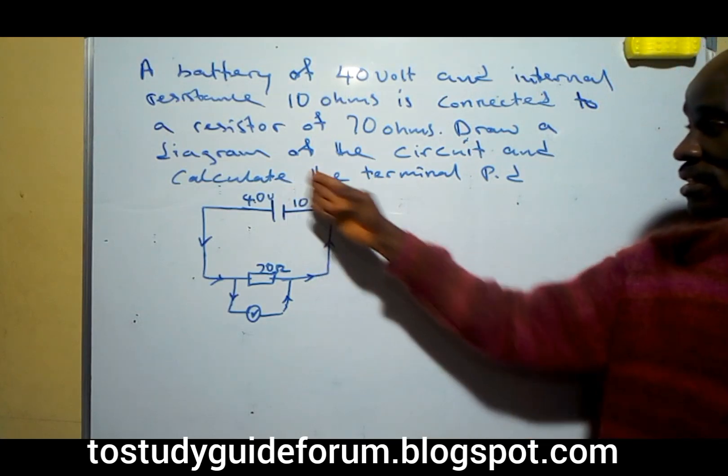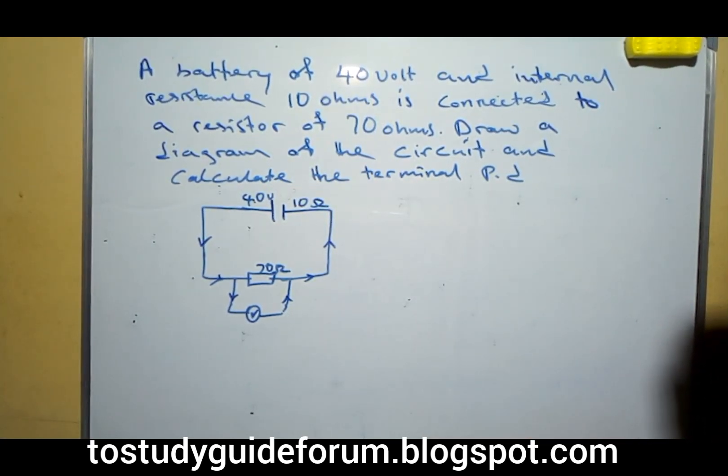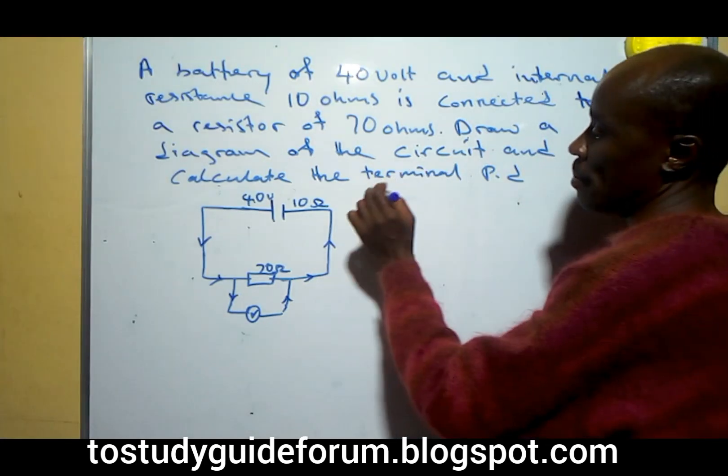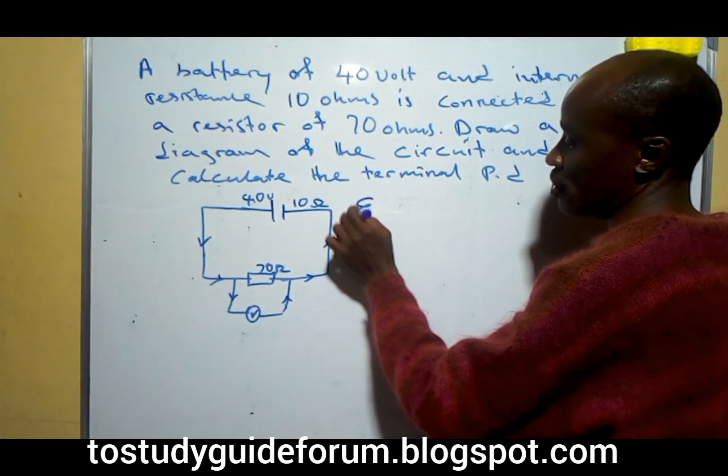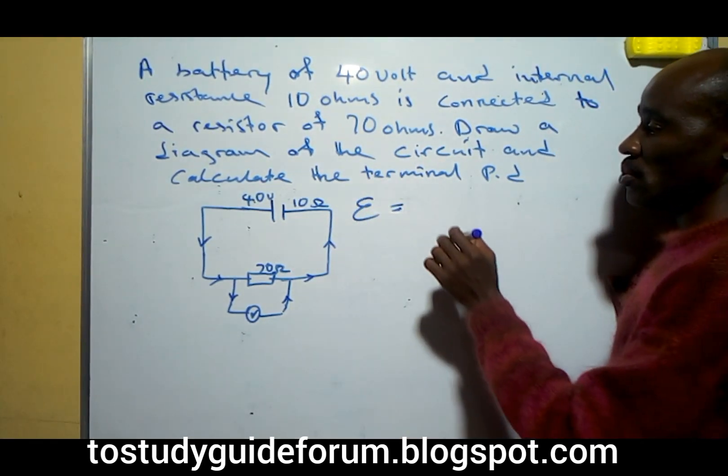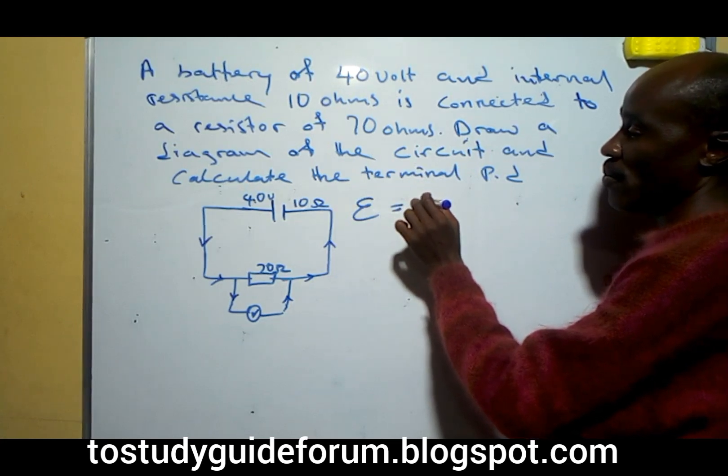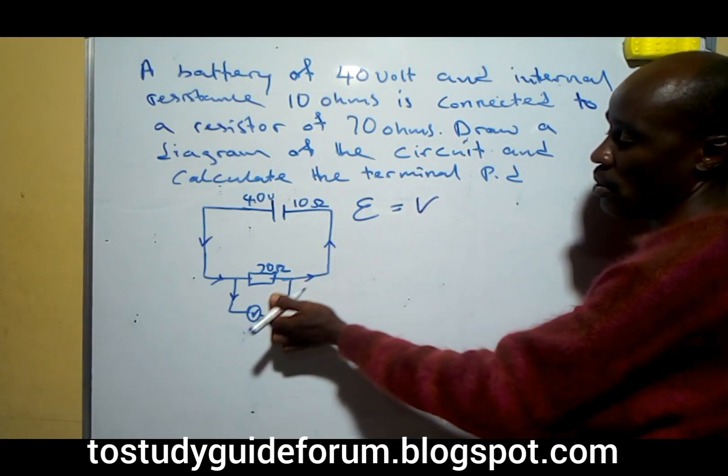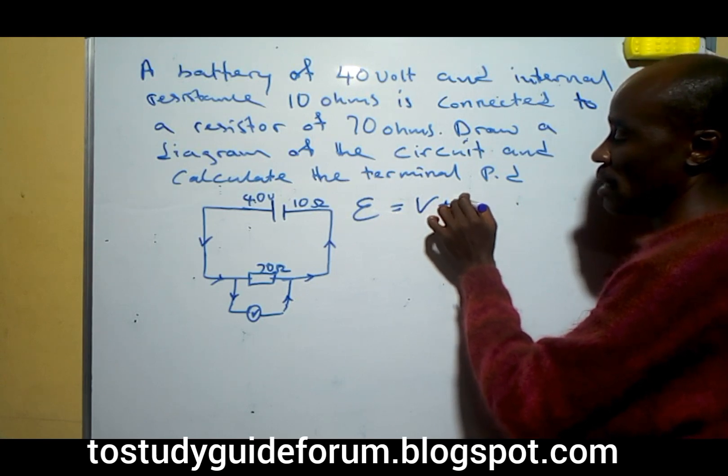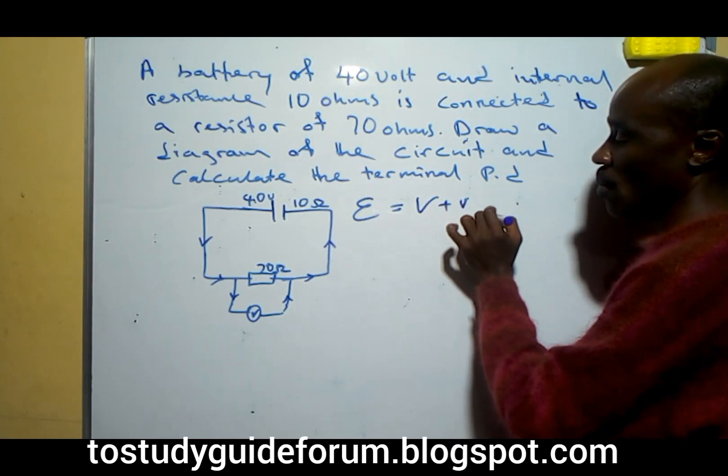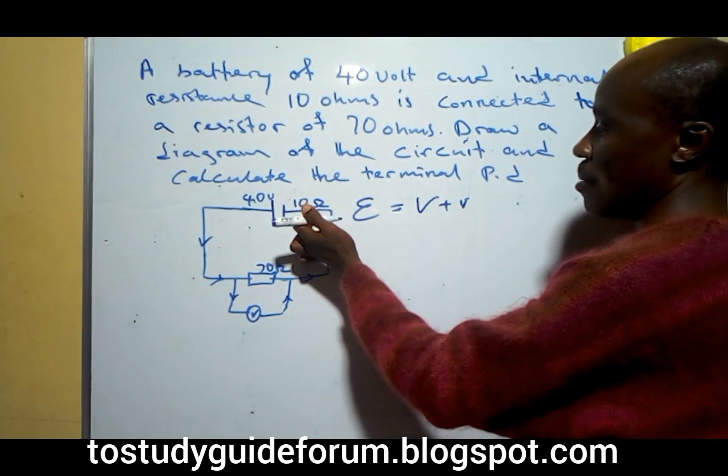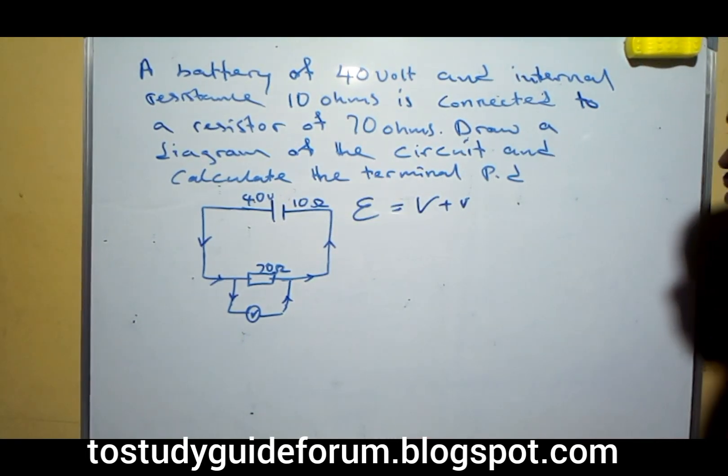So the question says that we should calculate the terminal PD. To calculate this terminal PD, we know that the EMF, the total energy, potential difference that we have, or the EMF, is the terminal PD plus the internal, which is this other one, small one. And to get this internal one, we are already given the resistance there.